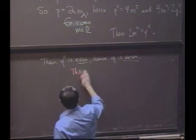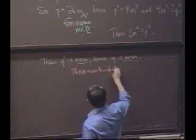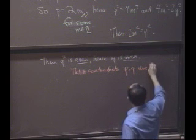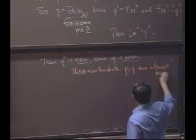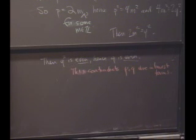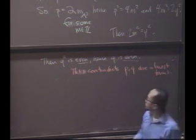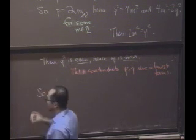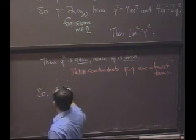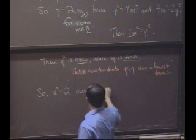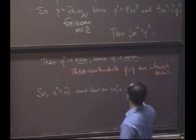So, what does this mean? This means that the assumption that X squared had a solution yielded a logical impossibility, a contradiction. Therefore, what? So, X squared equals 2 must have no solution in Q.